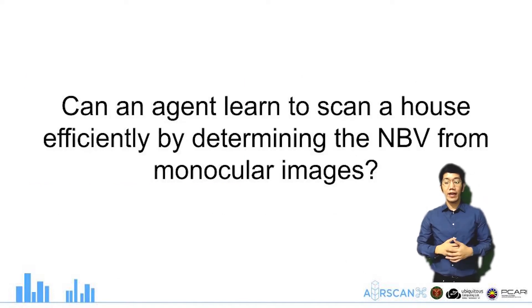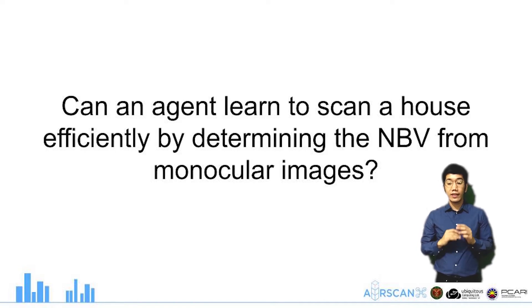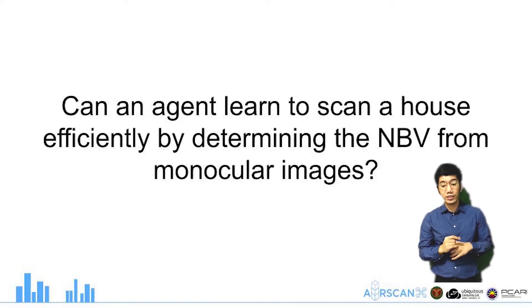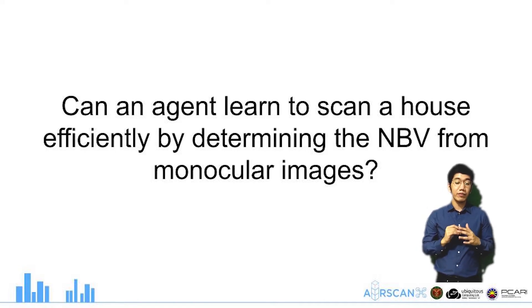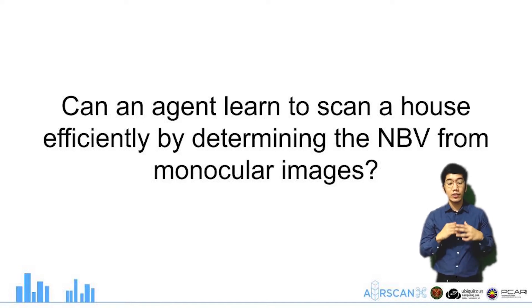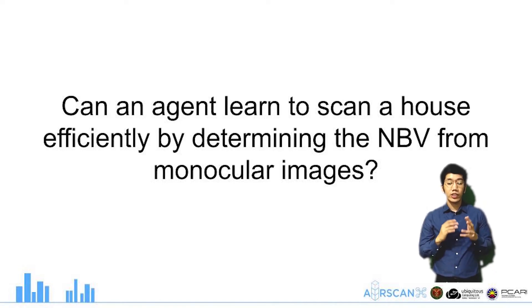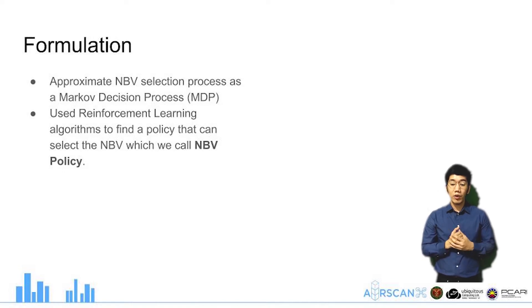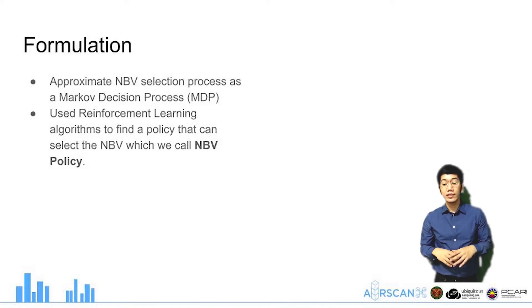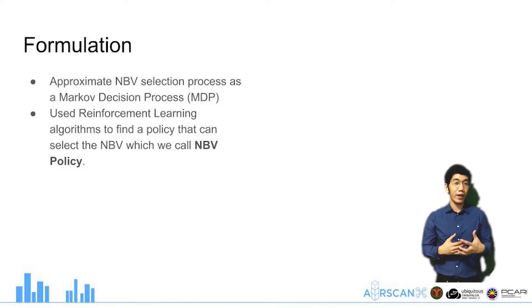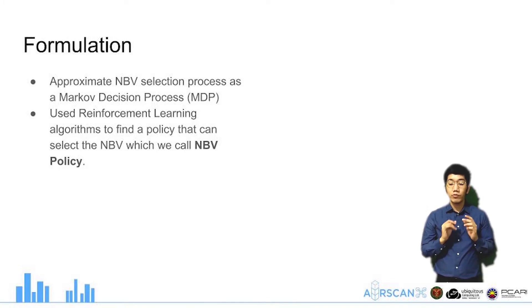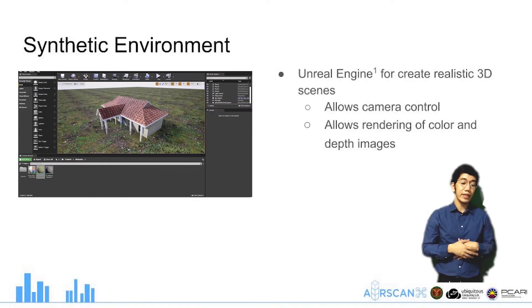In this paper, an algorithm is proposed to answer the question: can an agent learn to scan a house efficiently by determining the next best view from monocular images? Humans can do this task by looking at the house since we can identify occluded parts, such as under the roof. To explore this idea, we approximate the NBV selection process as a Markov Decision Process and apply reinforcement learning to find an optimal policy, which we call the NBV policy, to select viewpoints.